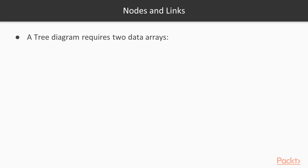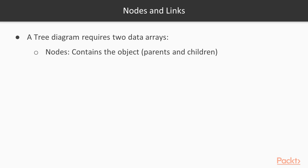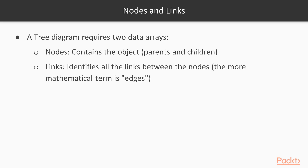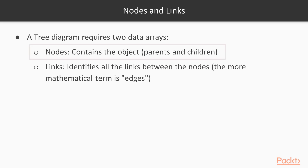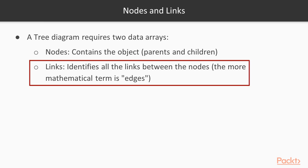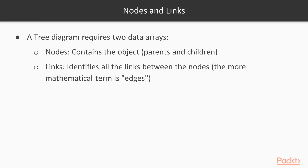A tree diagram always requires two data arrays: one for nodes and another one for the links. We are going to see both of these types of arrays in our example. Nodes contains the objects — the parents and children — whereas links identify all the connections between the nodes, sometimes also called edges. We are going to work through a similar example of the code that draws a tree diagram, mainly for the understanding of the process.